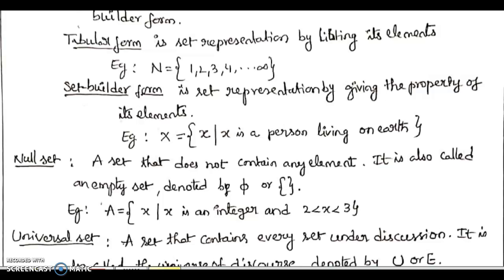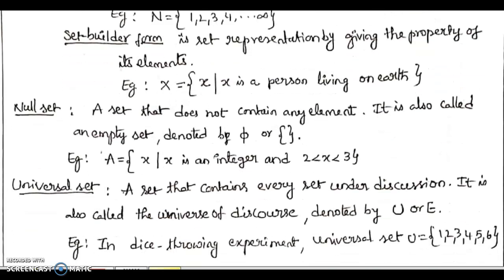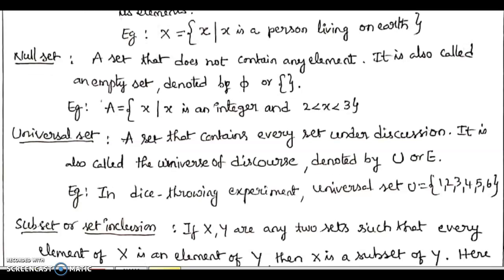Now, coming to the different basic types of sets. A null set is a set denoted with the symbol of empty brackets or the symbol phi, where there is no element. For example, A is equal to the elements x such that x is an integer where x is in the open interval (2, 3), meaning 2 less than x less than 3.